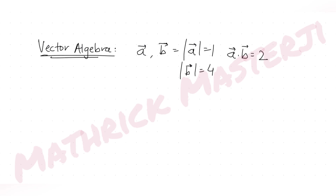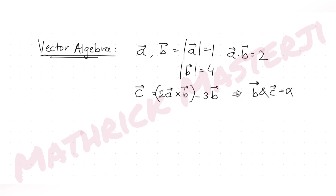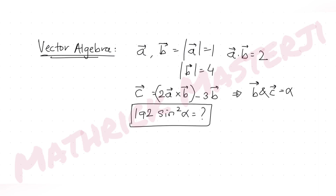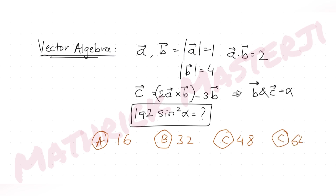Vector c is given as 2a cross b minus 3b. The angle between b and c is alpha. The question asks us to find the value of 192 sin²α. The answer choices are 16, 32, 48, and 64.